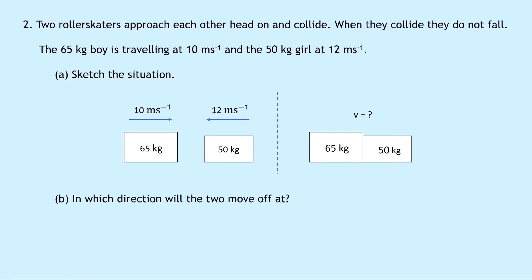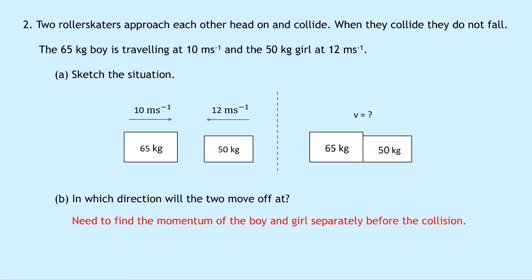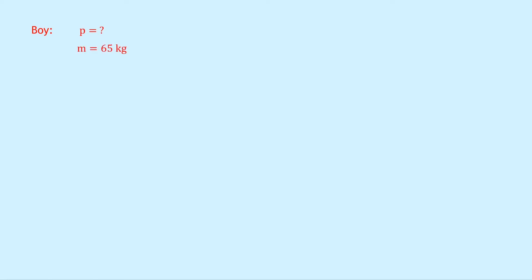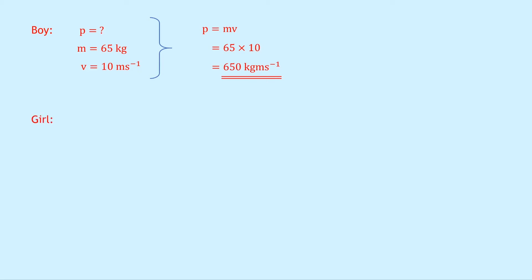Part b asks in which direction will the two move off. We need to find the momentum of the boy and girl separately before the collision and then determine which momentum is greater. For the boy: mass = 65 kg, velocity = 10 m/s. Using p = mv gives 65 × 10 = 650 kilogram meters per second.